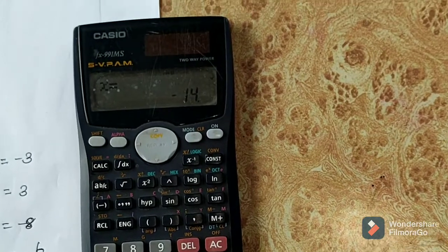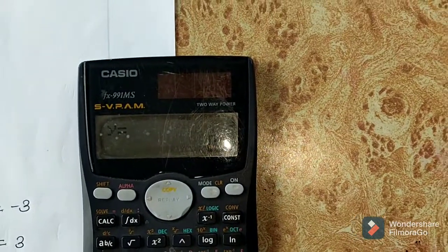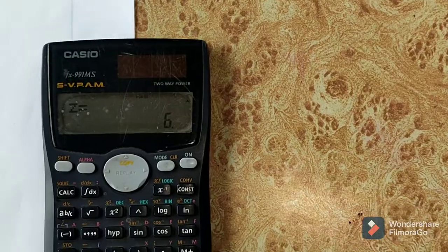Then press equal to get the values. The value of X is minus 14, Y is 0, and Z equals 6. Thank you.